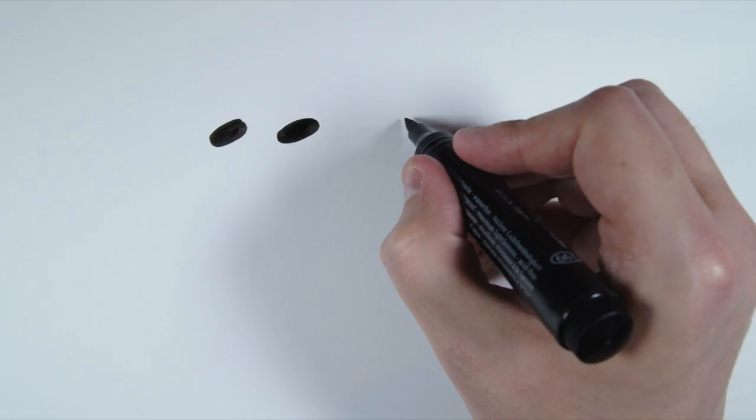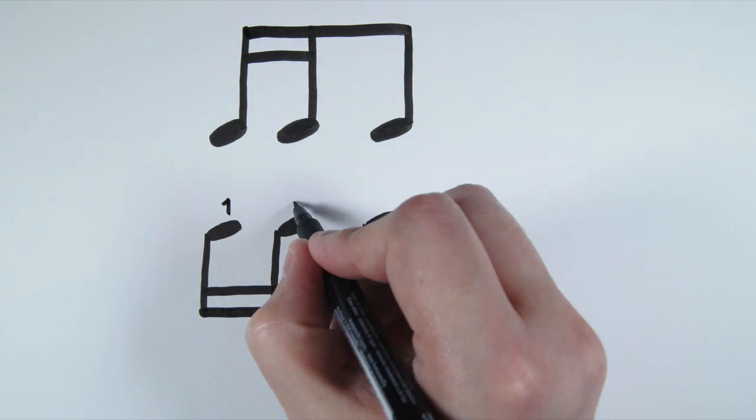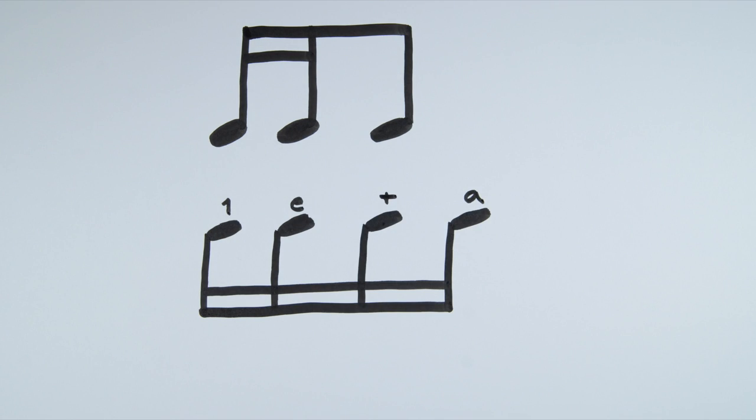Now let's look at counting different sixteenth rhythms. Take this figure for example, two sixteenths and an eighth. Let's put our template of sixteenth notes underneath so we can see how they line up. The first two notes are sixteenths, so we know they will be 1-E.